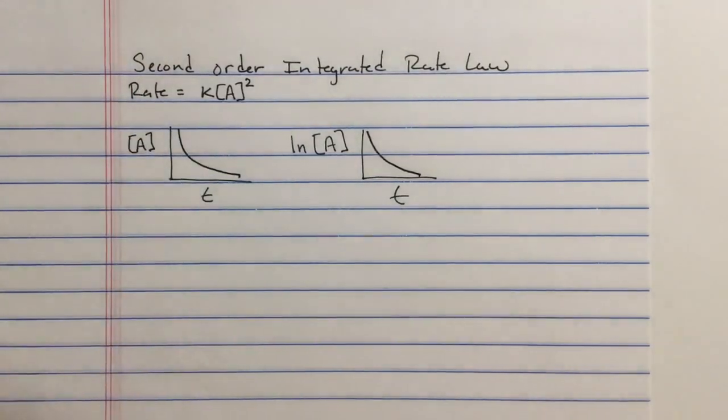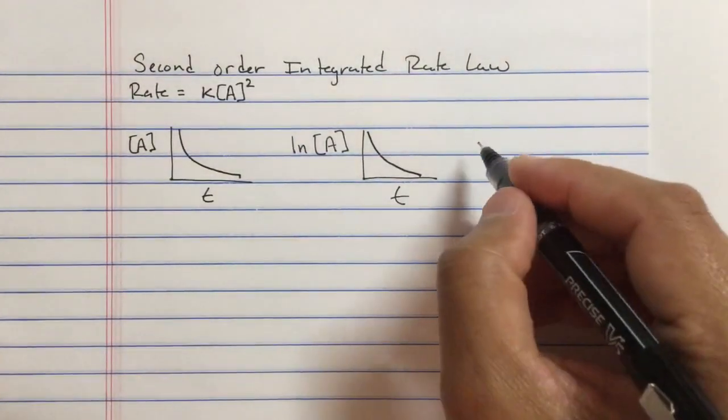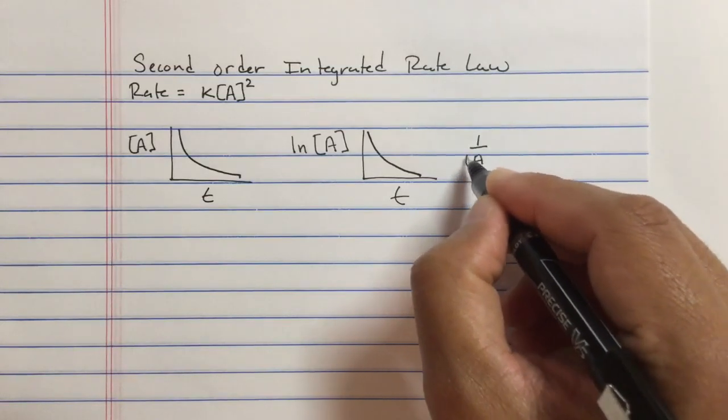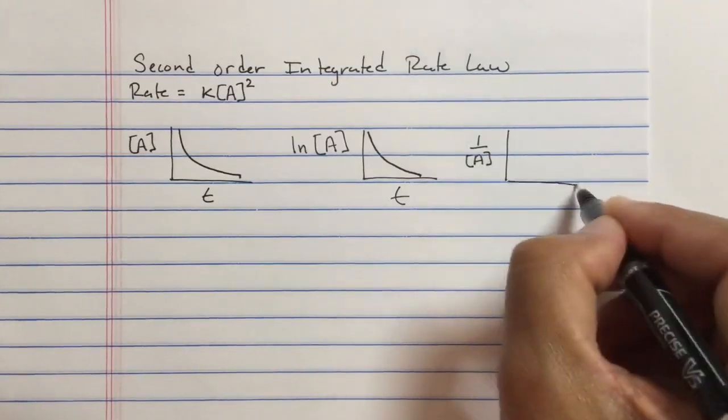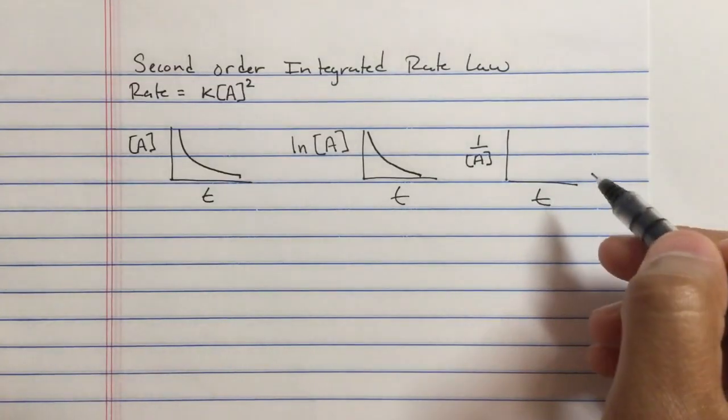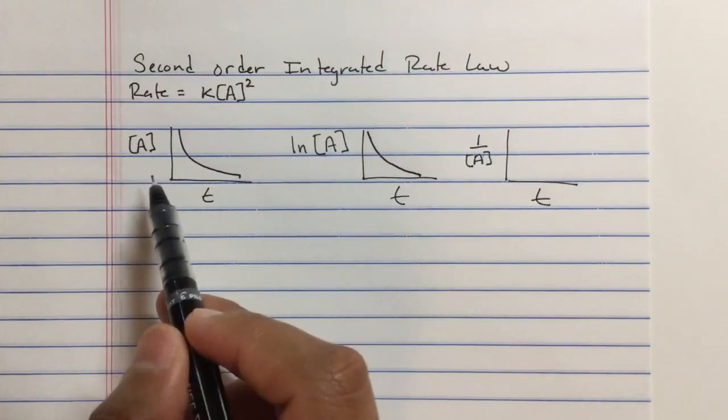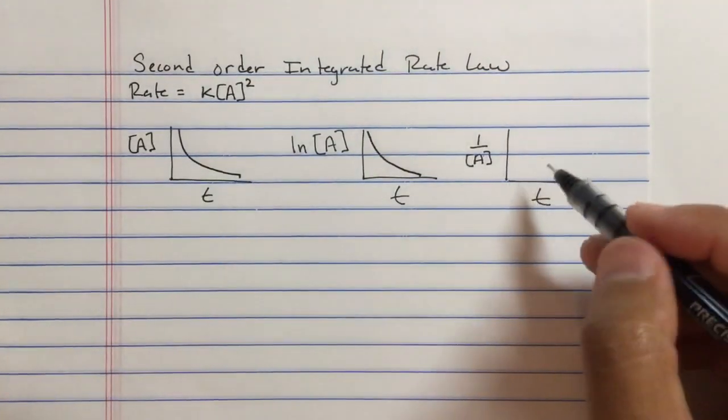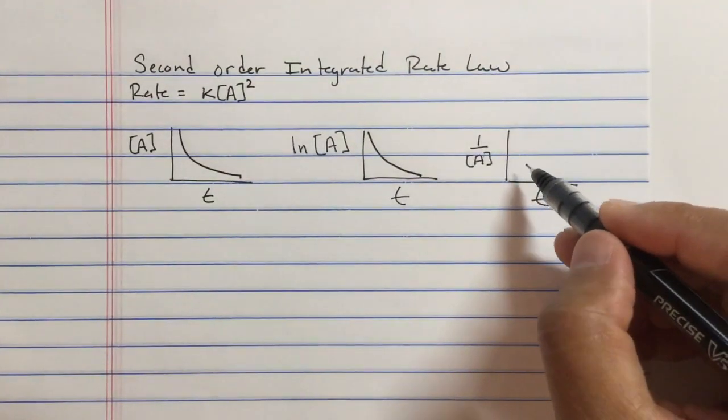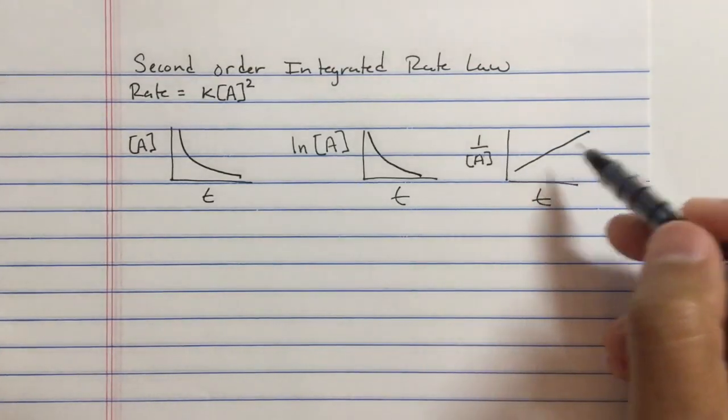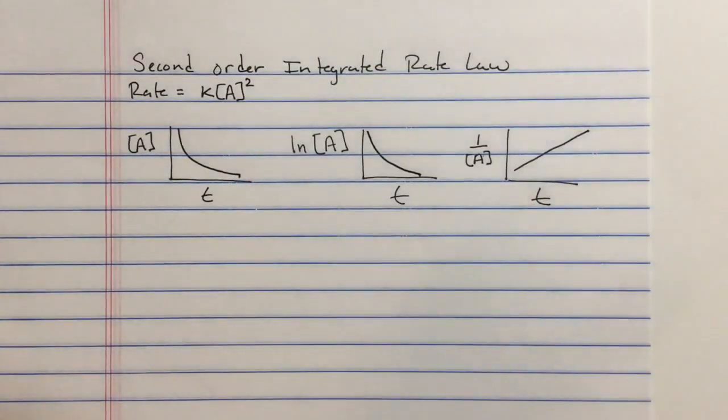For a second order reaction, if we plot 1 over [A] versus time, you see that we're taking the inverse of this problem right here. When we take that data and take the inverse and plot versus time, you get that straight line with a positive slope.